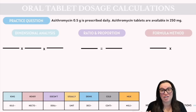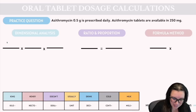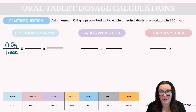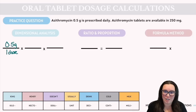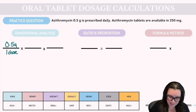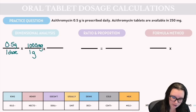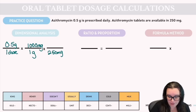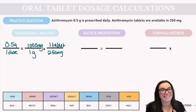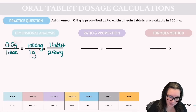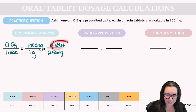This is where dimensional analysis really shines because we can do the conversion within the problem. Our first fraction is desired dose over doses to give: 0.5 grams over one dose. For the middle conversion fraction, we know one gram equals 1,000 milligrams — so we put 1,000 milligrams on top and 1 gram on the bottom to align our units. Lastly, the volume over the dosage we have: one tablet over 250 milligrams. Grams cancel with grams, milligrams cancel with milligrams, leaving us just with tablet and dose.